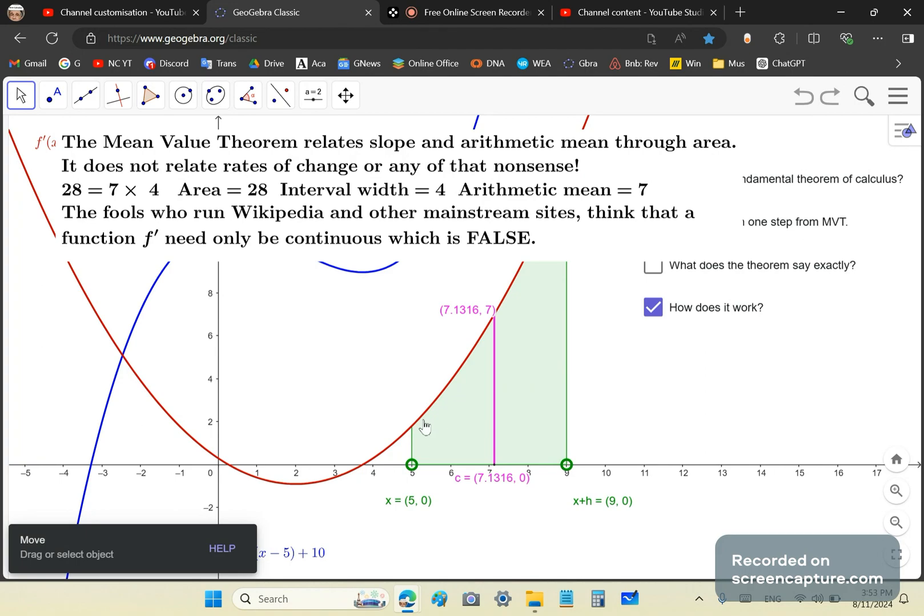Then you take that magenta line multiplied by 4 and you get the area. The area of this green shaded block is 28 square units because the interval width is 4 and the arithmetic mean is 7. So this red function or F prime must be smooth, not only continuous. And that's pretty much it.